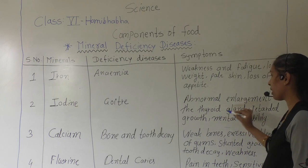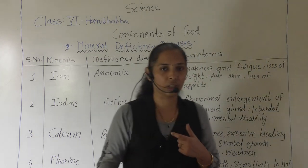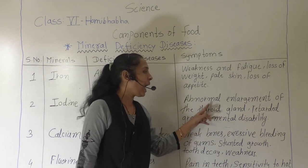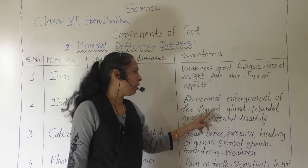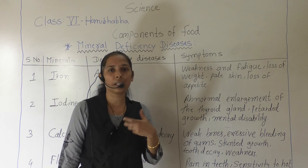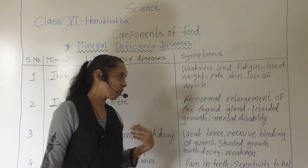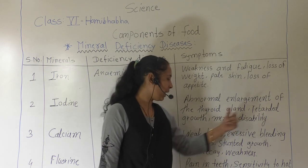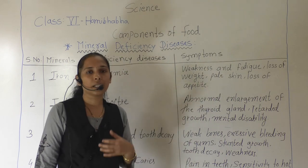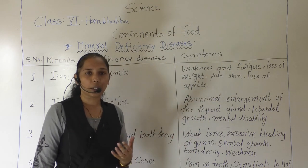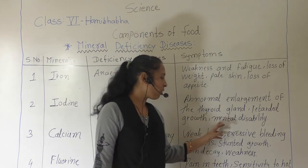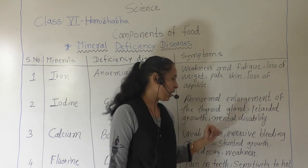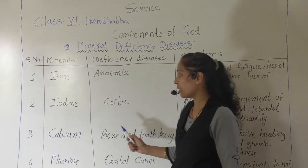As we discussed in our previous point, the thyroid gland is present in the neck region. If our body has an iodine deficiency, the growth of the thyroid gland becomes abnormal — there is no proper growth; it continuously increases in shape or size, and this causes goiter. The next symptom is retarded growth, meaning there is not proper or enough physical growth of the body — the physical growth gets stopped. And because of the lack of iodine, there can also be mental disabilities.